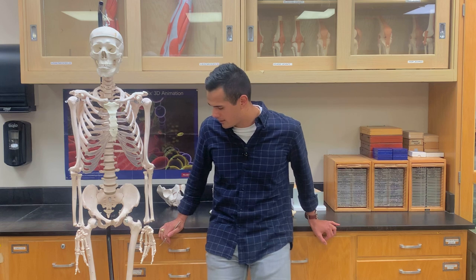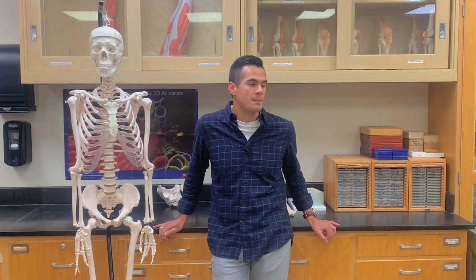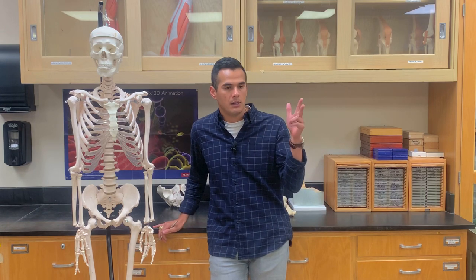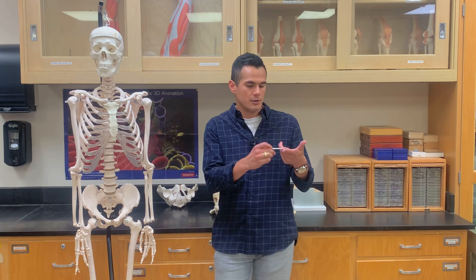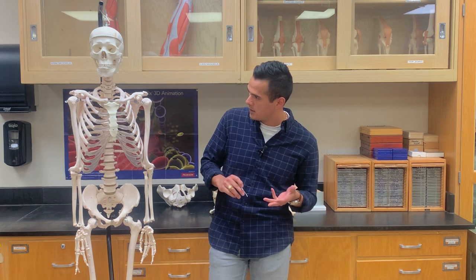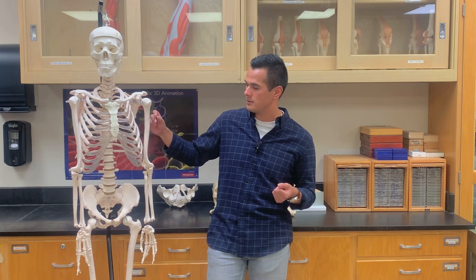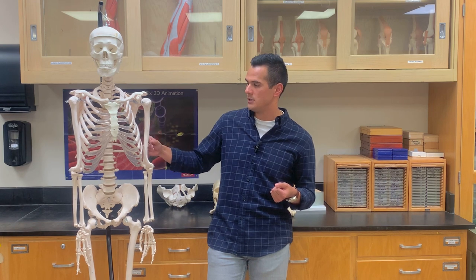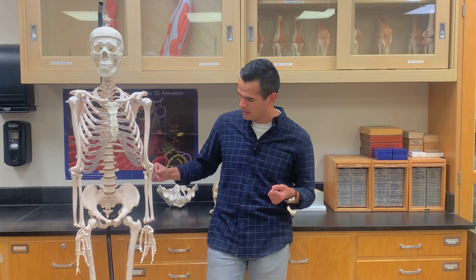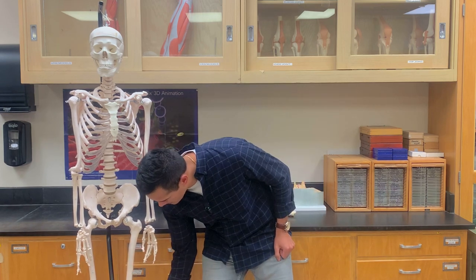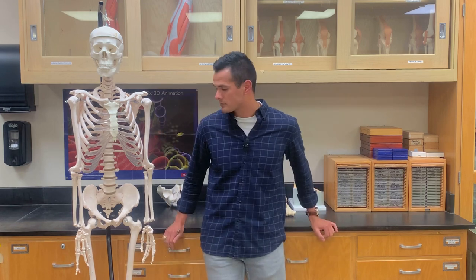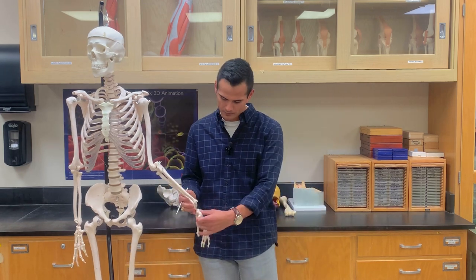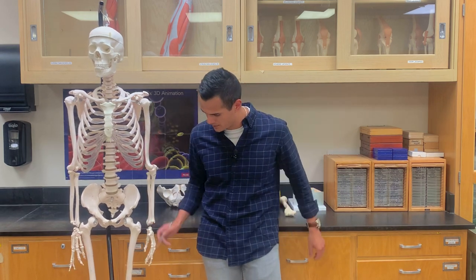The next thing we need to discuss is the classification of bones. We can classify bones into four main categories: long bones, short bones, irregular bones, and flat bones. The humerus is an example of a long bone. The bones of the upper and lower extremities are also long. Short bones include the carpals and the tarsals. The patella is also considered a short bone.